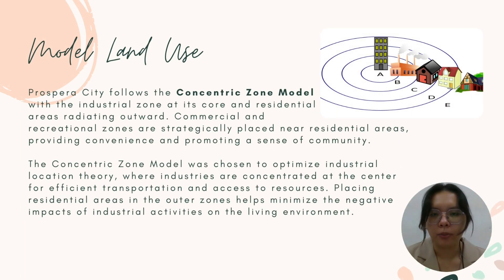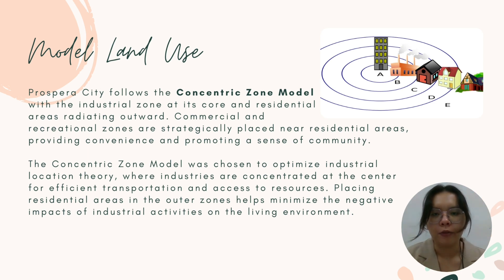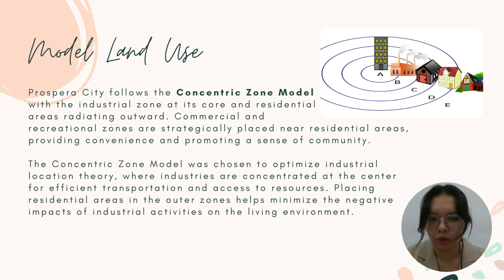Prosperity follows a concentric zone model with an industrial zone at its core, and residential areas further outward, with commercial and recreational zones strategically placed near residential areas, providing convenience and promoting a sense of community. The concentric zone model was used to optimize industrial location theory, where industries are concentrated at the center for efficient transportation and access to resources. Placing residential areas in outer zones helps minimize the negative impact of industrial activity on the living environment.